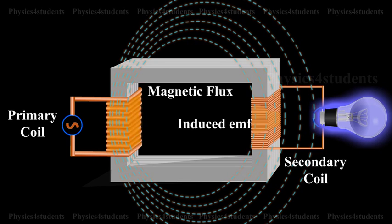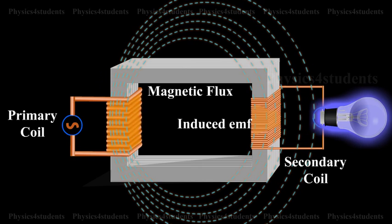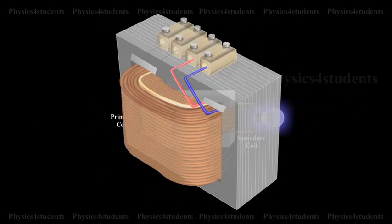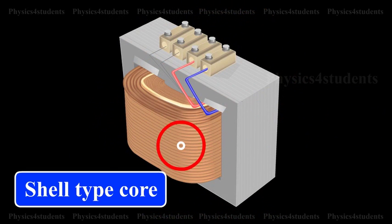The flux produced in the primary coil is not completely linked with the secondary coil due to leakage. This results in the loss of energy. This loss can be minimized by using a shell-type core.